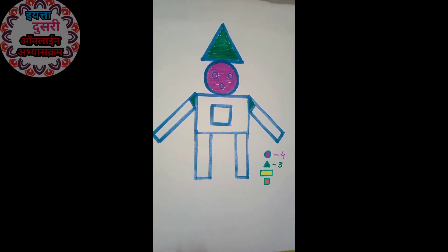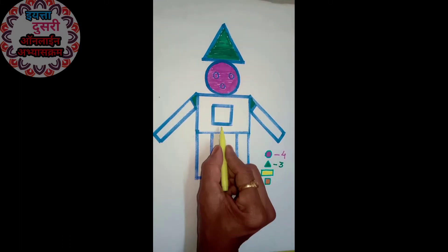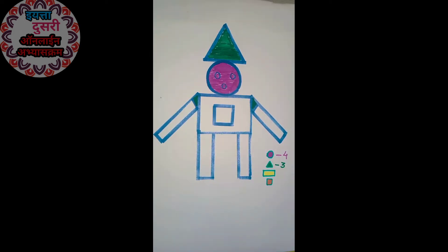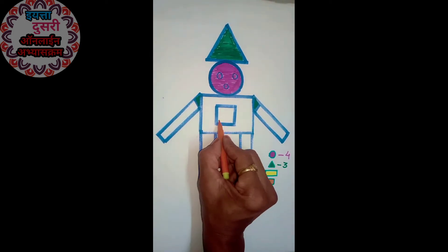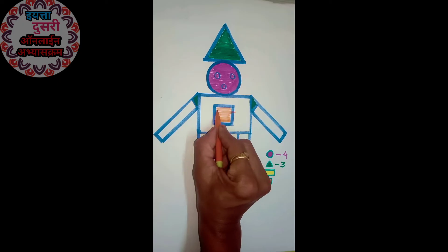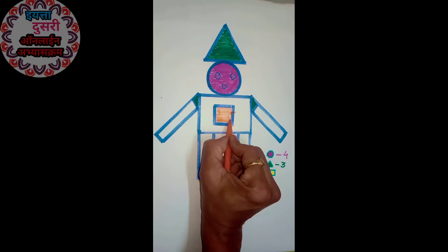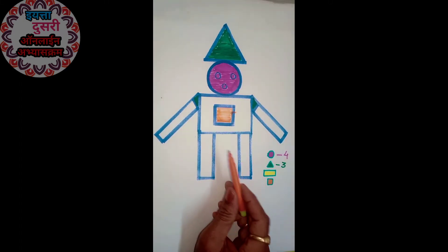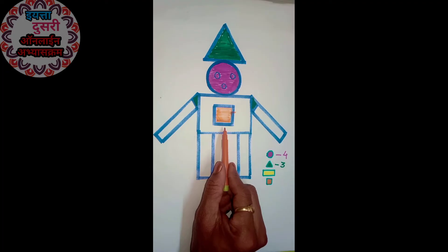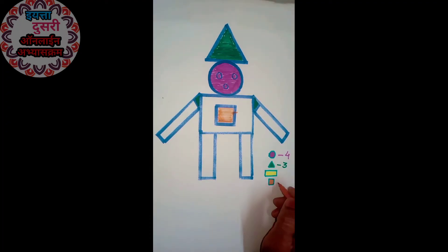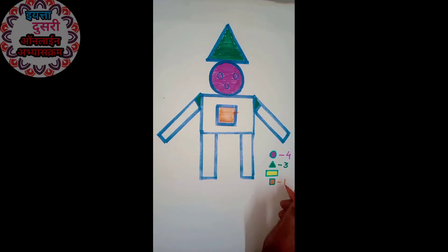Now here is square. This is square. I fill the color — orange color. This is only one square in this figure. Okay. Now I write here: one square.